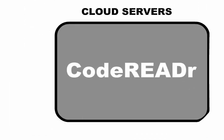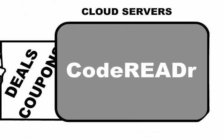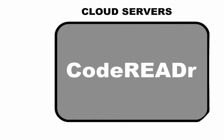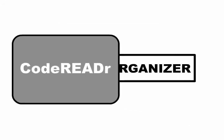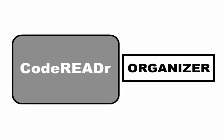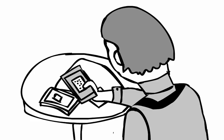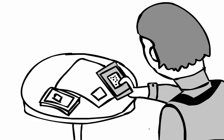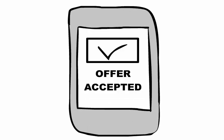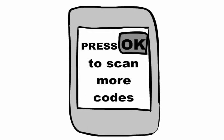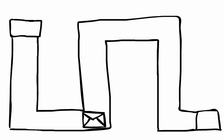Here's how it works. You have your deals and coupons pushed into CodeReader's cloud servers. We provide your waitstaff with an application that organizes the offers. The waitstaff can scan barcodes off of phones and print to redeem vouchers. The CodeReader cloud will tell your waitstaff if the offer is valid and clear it, and we deliver you a report that you can reconcile.